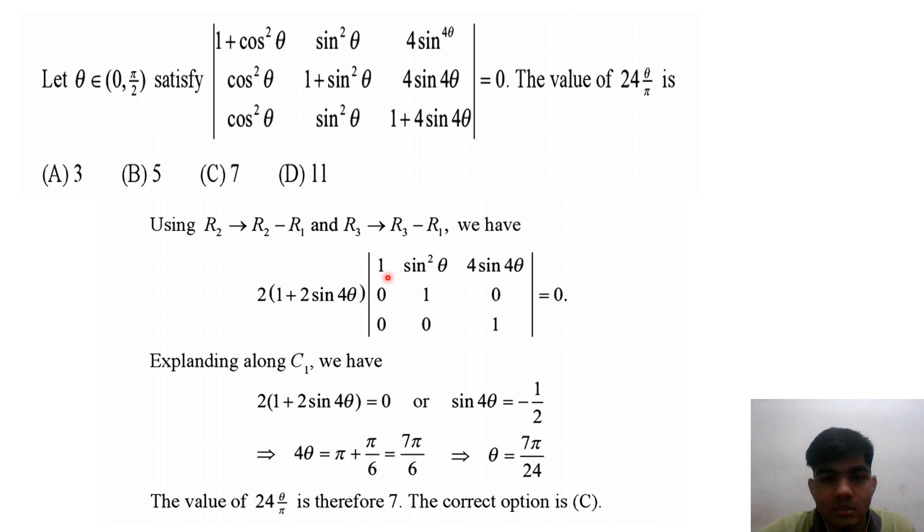Expanding along the first column where two elements are 0: (2 + 4sin4θ) times the resulting 2×2 determinant equals 0. This simplifies to 2(1 + 2sin4θ) = 0, so sin4θ = -1/2.